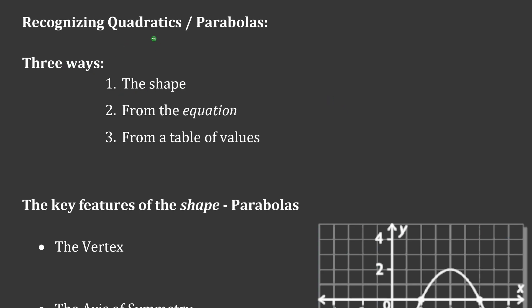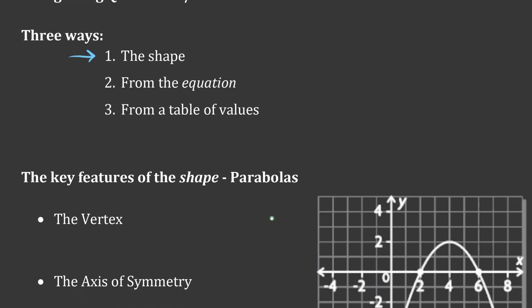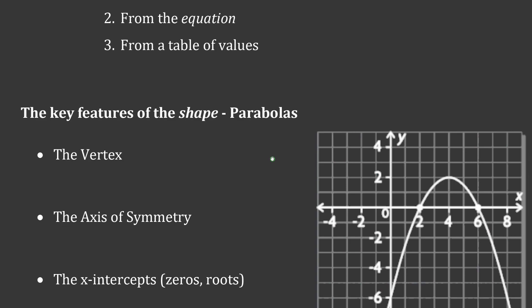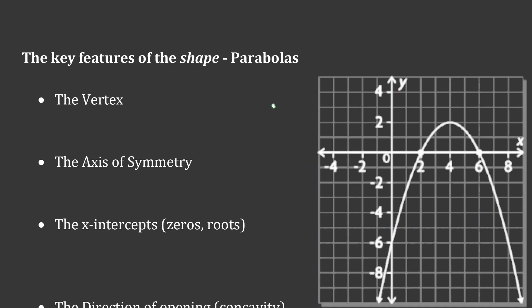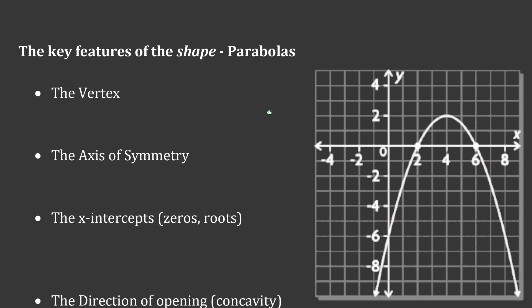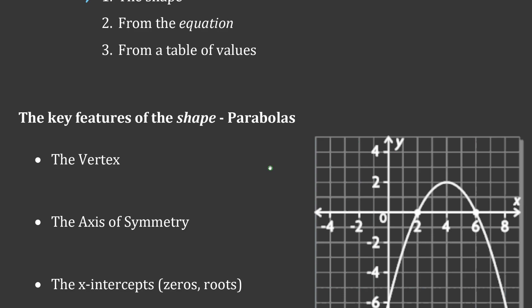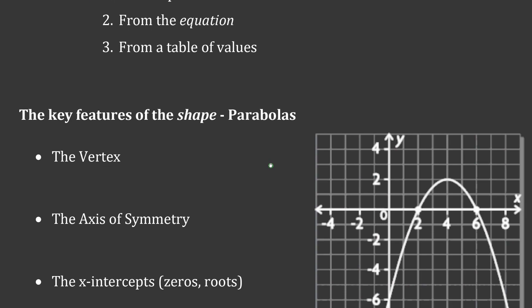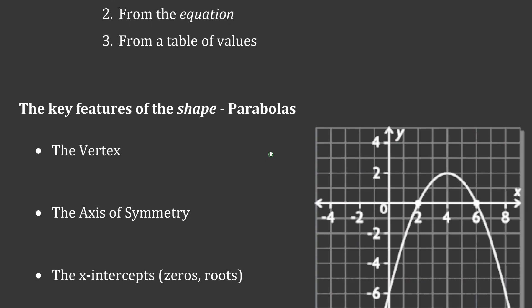There are three ways to recognize if what you're looking at is a quadratic or a parabola. The first way I'm going to focus on is the shape. We're going to take a graph and talk about the key features or key properties of a parabola. After that, we'll look at the equation and table of values.